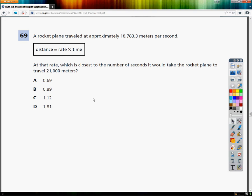Once again, the test is nice enough to give you a formula in a box. So anytime they do that, you should open it and write it down somewhere. Distance equals rate times time.